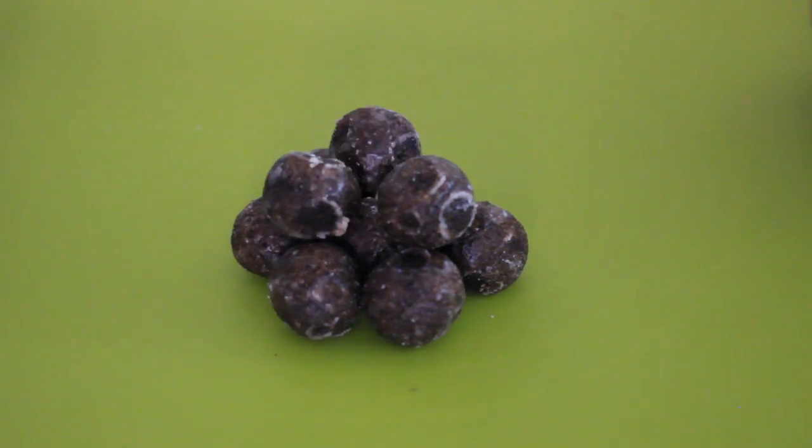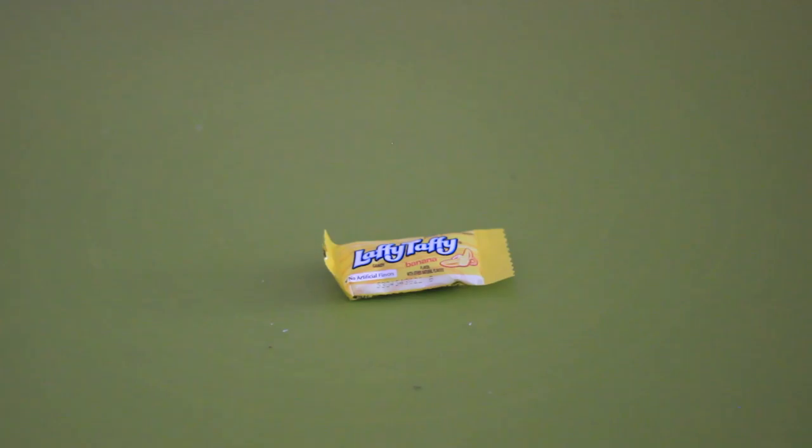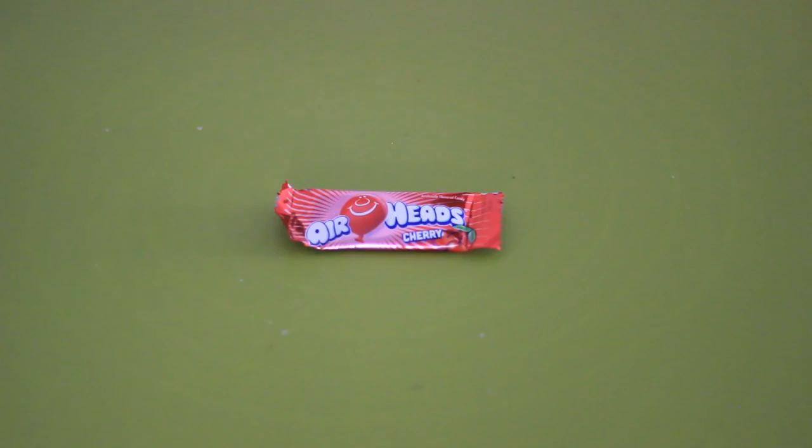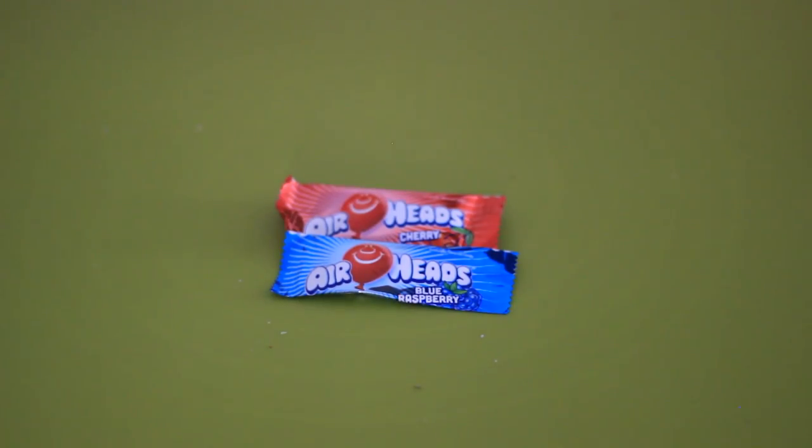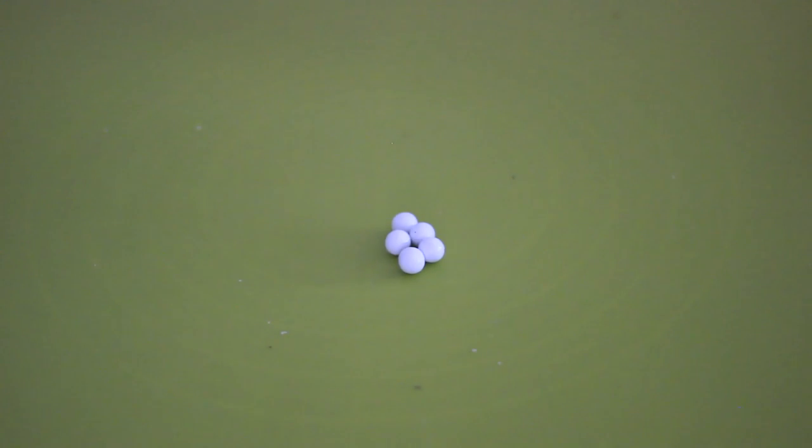You will need a few munchkins from Dunkin Donuts, lollipop sticks, yellow Laffy Taffy for the bird beaks, cherry and blue raspberry airheads, strawberry Laffy Taffy, white sixlets, green jelly beans, candy eyeballs, and green jumbo confetti sprinkles.